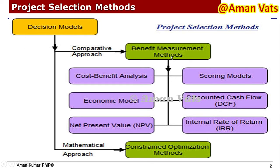In comparative approach, when we talk about benefit measurement methods or benefit measurement comparisons, we can use cost-benefit analysis, economic model, net present value, scoring models, discounted cash flow, and internal rate of return (IRR). When we talk about mathematical approach, we have constraint optimization methods like linear programming and so on.